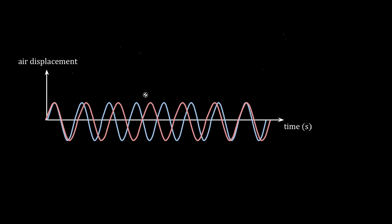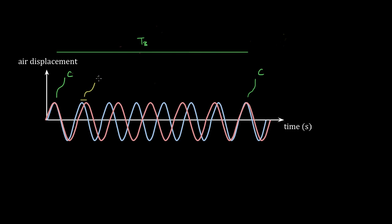Let's just look at the two waves individually. Assuming they start off in phase — perfectly constructive — we want to know how long it takes for them to become constructive again. Every time the red wave goes through one whole cycle, it is now this far in front of the blue wave — meaning those crests are now out of phase by this amount. That amount is just the difference in periods between the two waves: T1 minus T2, where the red wave is wave one and the blue wave is wave two.